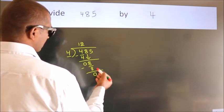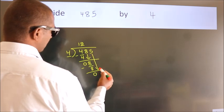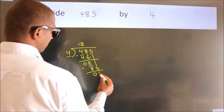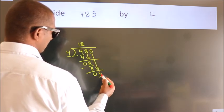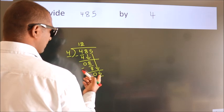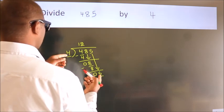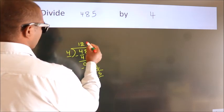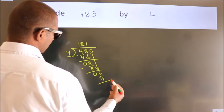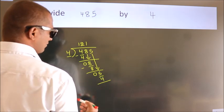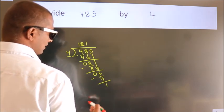After this, bring down the beside number. So 5 comes down. So 5. A number close to 5 in the 4 table is 4 once is 4. Now we subtract. We get 1.